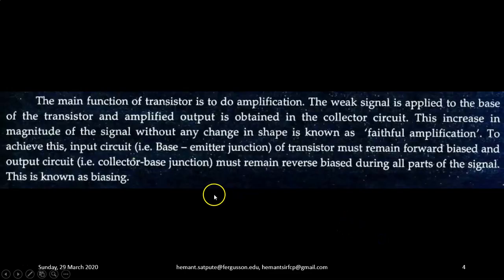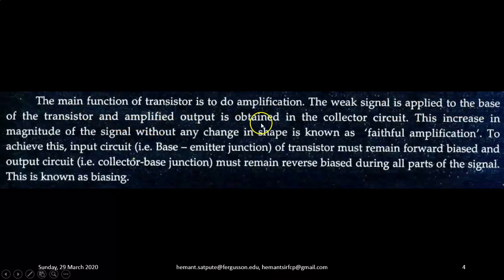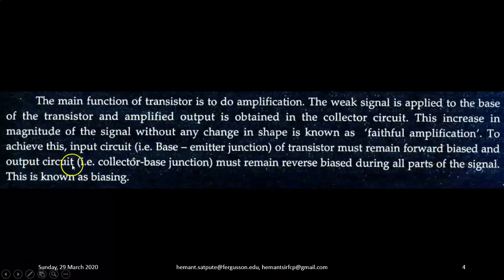Let us see what is the meaning of transistor biasing. The main function of a transistor is to do amplification. The weak signal is applied to the base of the transistor and the amplified output is obtained in the collector circuit. This increase in the magnitude of the signal without any change in shape is known as faithful amplification. To achieve this, the input circuit — that is, the base-emitter junction — must remain forward biased and the output circuit — that is, the collector-base junction — must remain reverse biased during all parts of the signal. This is known as biasing.